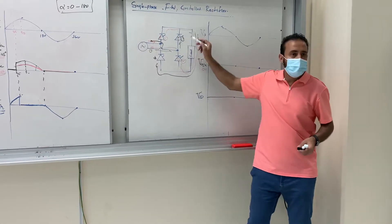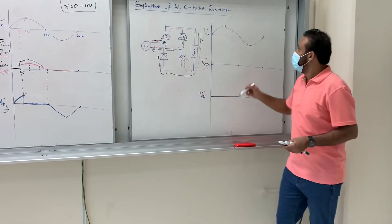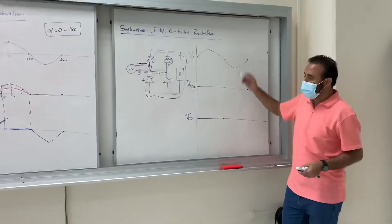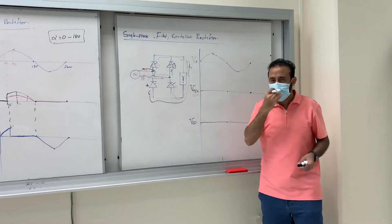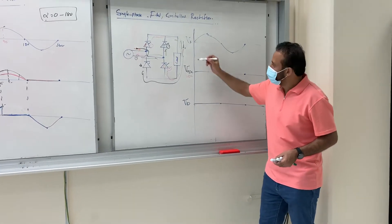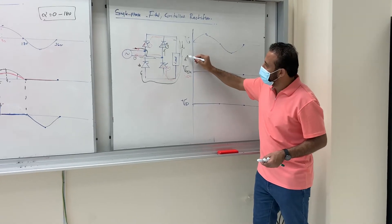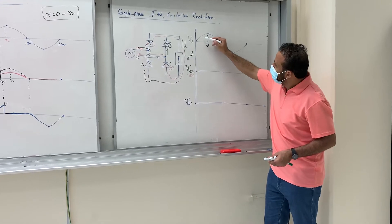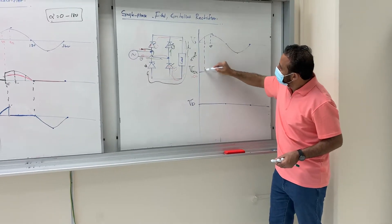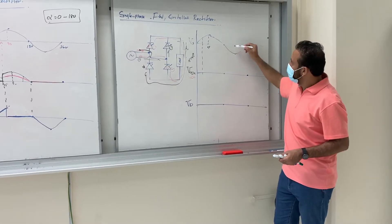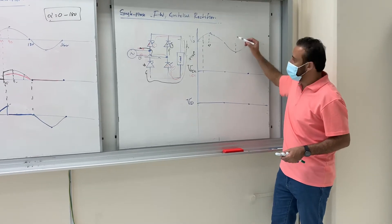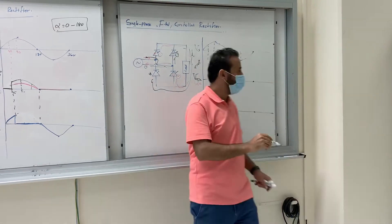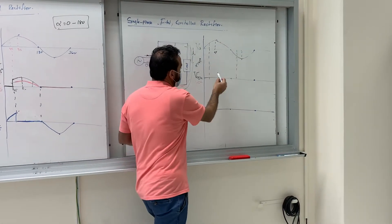But now instead of power diodes, we are using thyristors. Everything in the output will be positive — same polarity. Let's choose alpha = 45° again. At 45°, this is 90° and this is 45°. You draw the pulse after 45° for the positive half, and the same for the negative half — again starting at 45° offset. That gives us the output.